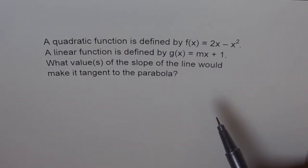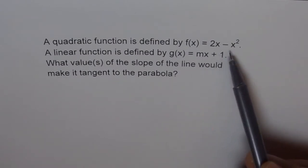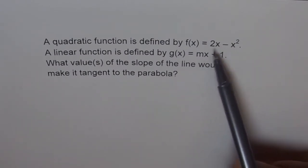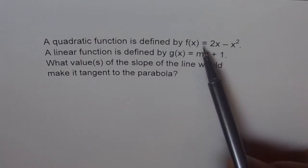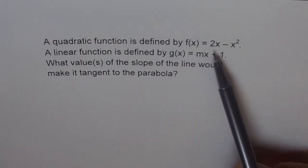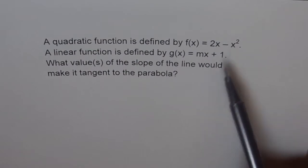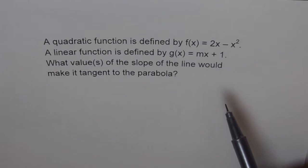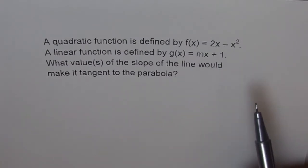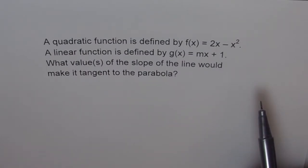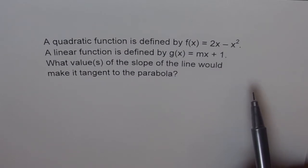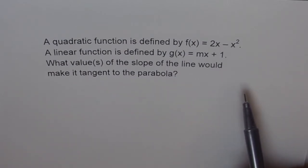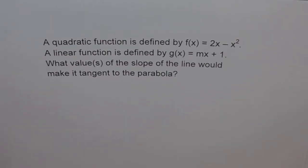For a line to be tangent to the parabola, they will have a common point. So we should equate these two functions and bring the terms together to get a quadratic equation. Then we solve for b² - 4ac and set it equal to 0, because only then there will be one point of intersection. If b² - 4ac is positive, there will be 2 intersections; if negative, then none.